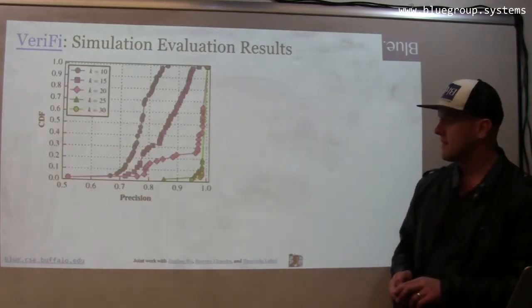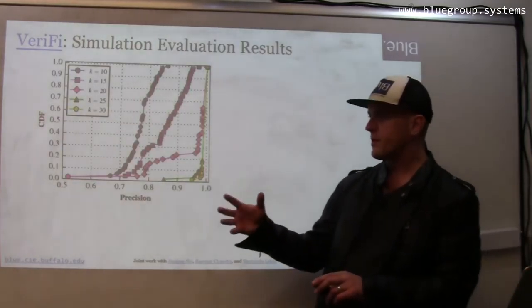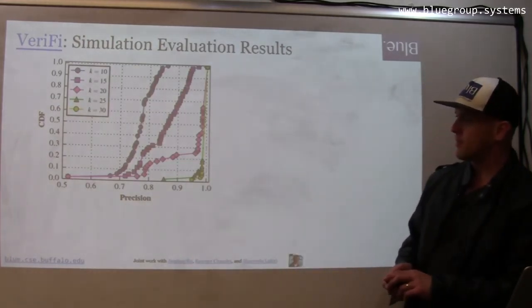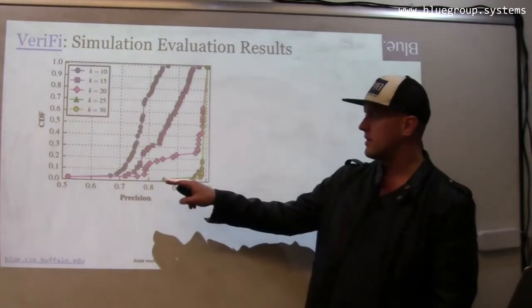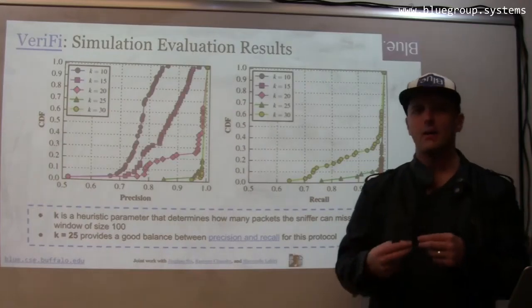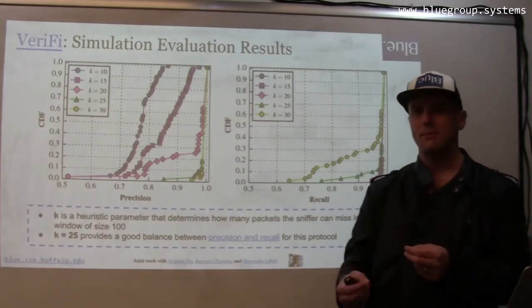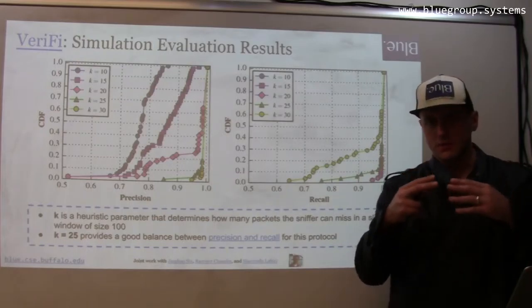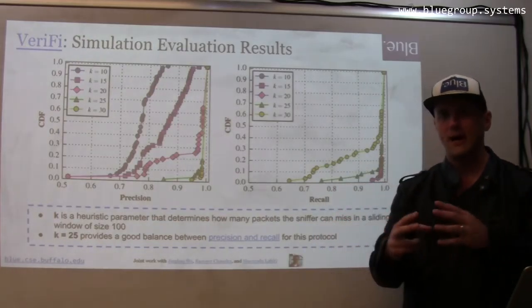What we see here is that we look both at precision and recall as is typical. The precision gets quite good once, and the parameter here that was used, K, determines how many packets the sniffer can miss in a sliding window. In order to make the search feasible, we have to bound the search space.